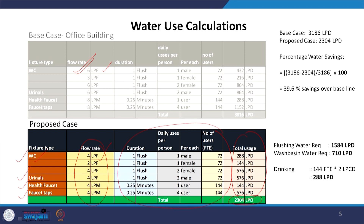This water consumption is divided into flushing water requirement for WC and urinals, and wash basin requirement including health faucet and faucet taps as potable water. In addition, drinking water was taken as 2 liters per capita per day multiplied by total FTE, giving 288 liters per day.